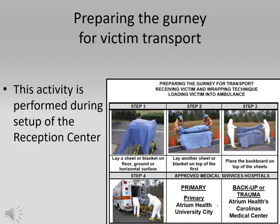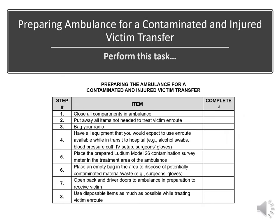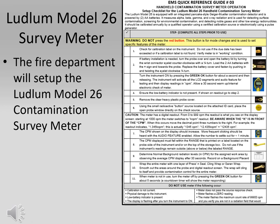Preparing the gurney for patient movement should occur early in the setup portion of the reception center: open the gurney, place a blanket or sheet over it, and stage it near the ambulance. The two approved hospitals for patient transport are Atrium Health University as the primary facility and Atrium Health's Carolina Medical Center as backup or for trauma patients. The ambulance preparation checklist guides you to put away all items not required for transport, retrieve needed items, cocoon the patient inside two barriers to prevent cross-contamination, place a radioactive waste bag in the area, and stage a survey meter within reach.